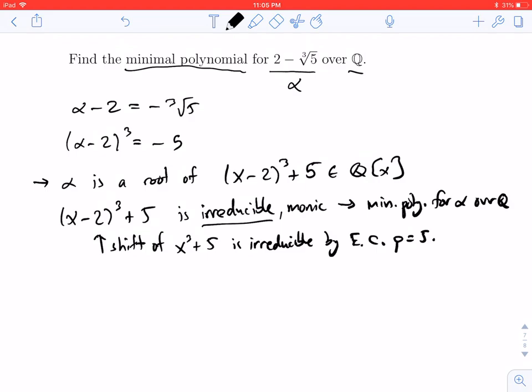So we know if x³ + 5 is irreducible, which it is, then (x - 2)³ + 5 is irreducible. It's monic, and therefore, again, it's the minimal polynomial for our alpha.